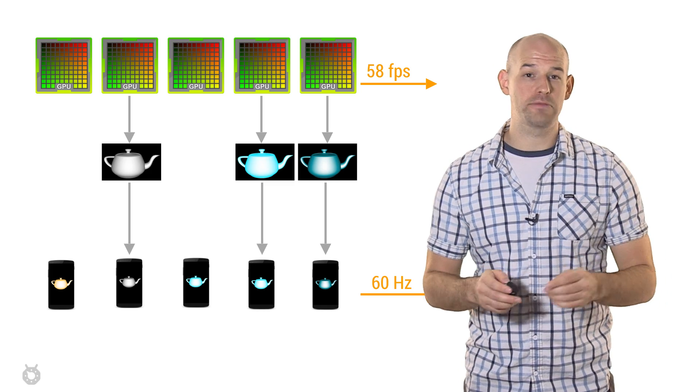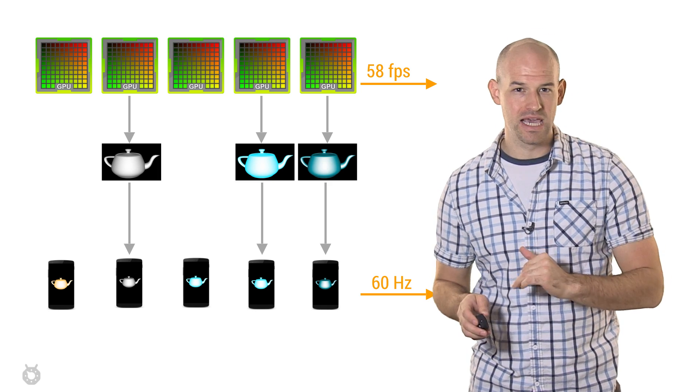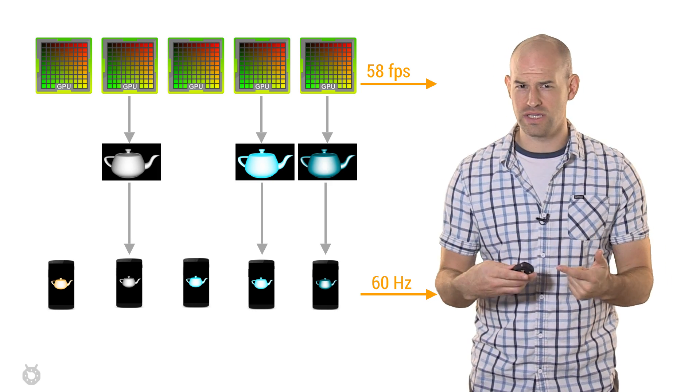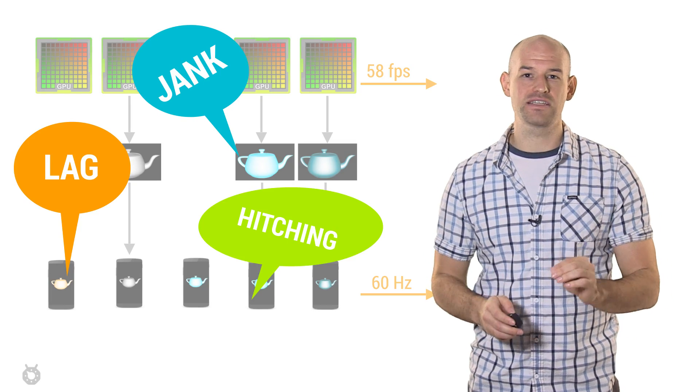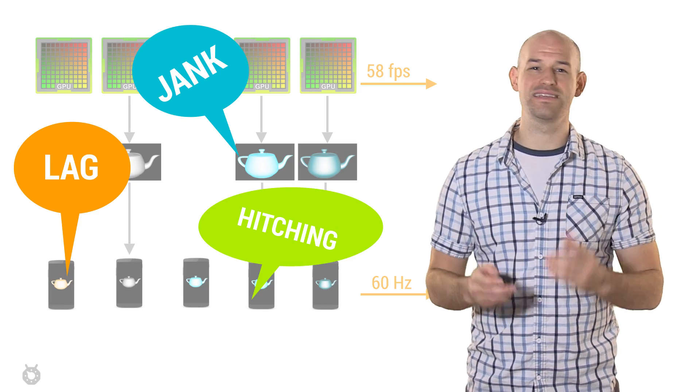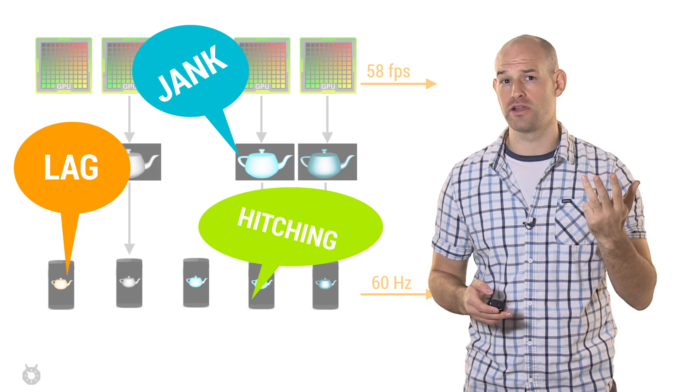When this happens intermittently, you get problems. For example, if your frame rate is higher than refresh rate, but suddenly dips, then the user will see a smooth animation broken up with sudden pauses, followed by the rest of the smooth animation. This exact effect manifests itself to the user in a less than smooth animated experience, which is often described as jank or hitching or lag or stutter.